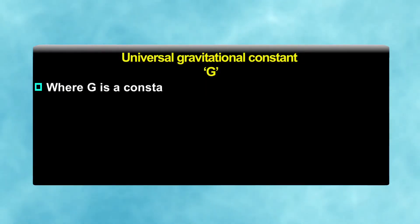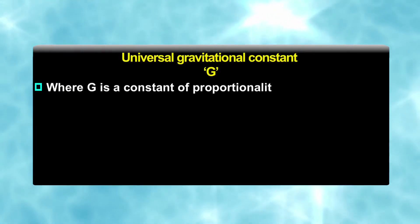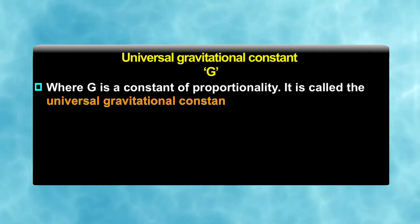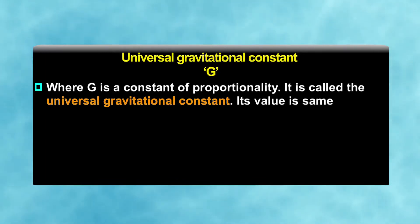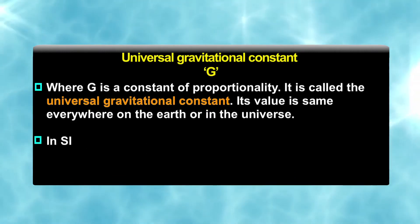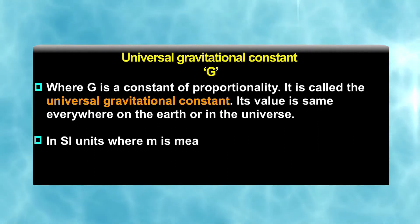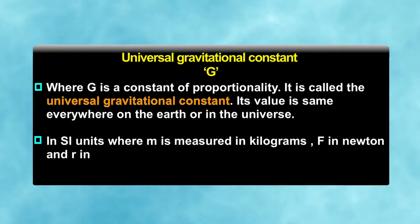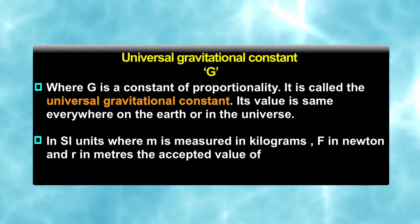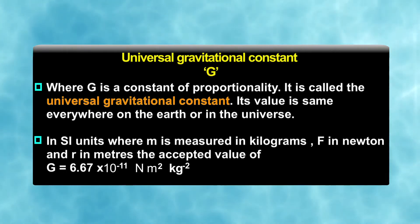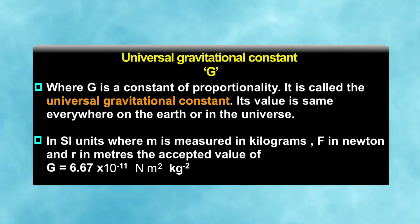What is G? G is a constant of proportionality, also called the universal gravitational constant. Its value is the same everywhere on earth or in the universe. In SI units, where mass is measured in kilograms, force in Newtons, and distance in meters, the accepted value of G is 6.67 × 10⁻¹¹ N·m²/kg².